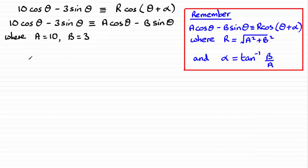And so therefore R is going to be equal to the root of A² plus B². So that's 10² plus 3², 100 plus 9. So you've got R as being the root of 109 and we're asked to give the exact value so we can just leave it like that.